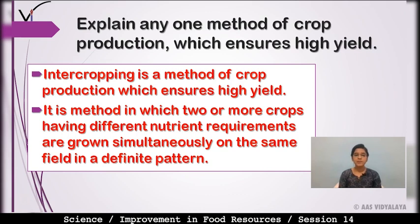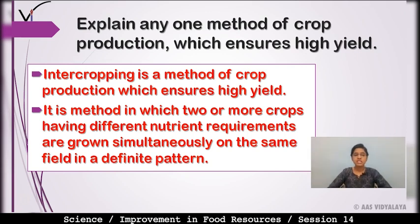Is method mein do ya do se zyada crops, jinki different nutrients requirement hoti hai, unhe ek saath grow karaya jata hai ek hi field pe, aur ek definite pattern mein. Jyada space nahi jaata, nutrients plants ko appropriate amount mein milte hain, aur crop se high yield mil jaati hai. Intercropping is a method of crop production which ensures high yield.